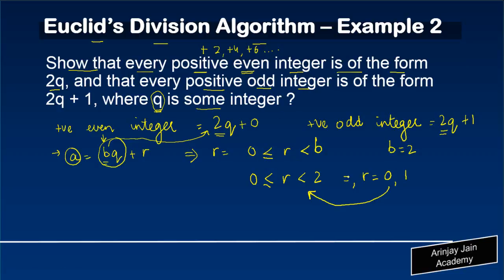Now, if r = 0 or 1, then what do we have in this formula? We have a = 2q + 0, or a = 2q + 1, because we substitute the values of r. In other words, a could be 2q or 2q + 1.